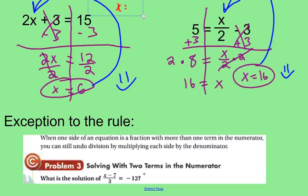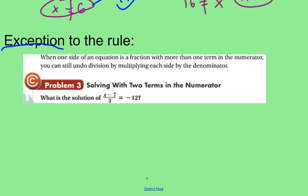Now, there is one exception to the rule that we just gave you. An exception is in a problem like this. So I'm going to read this, but we'll show you this example. When one side of an equation is a fraction with more than one term in the numerator. That means there's more than one thing in the top. You can still undo division by multiplying each side by the denominator. So this is where you don't really follow those rules. This is all one big fraction right now. And I want to rewrite it here. x minus 7 over 3 equals negative 12.